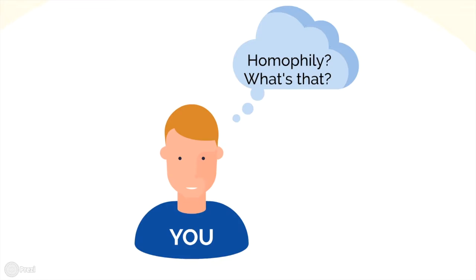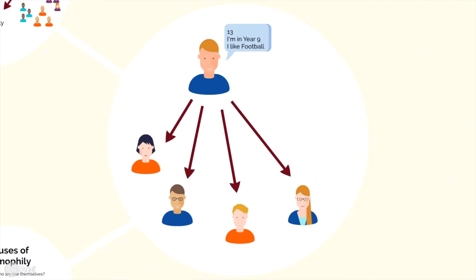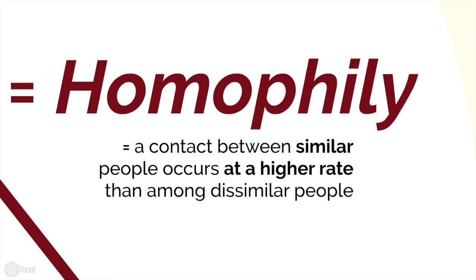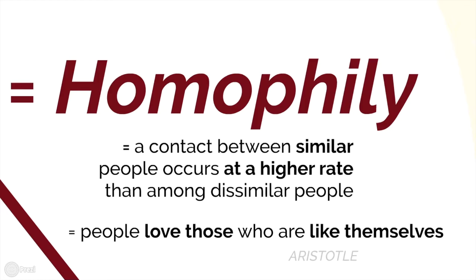So homophily — what is that? Think about your circle of friends for a moment. They are probably around the same age as you, share the same hobbies, and probably also have other similar interests. That in essence is homophily. It is the principle that contact between similar people occurs at a higher rate than among dissimilar people. Or, in simple terms, people love those who are like themselves.